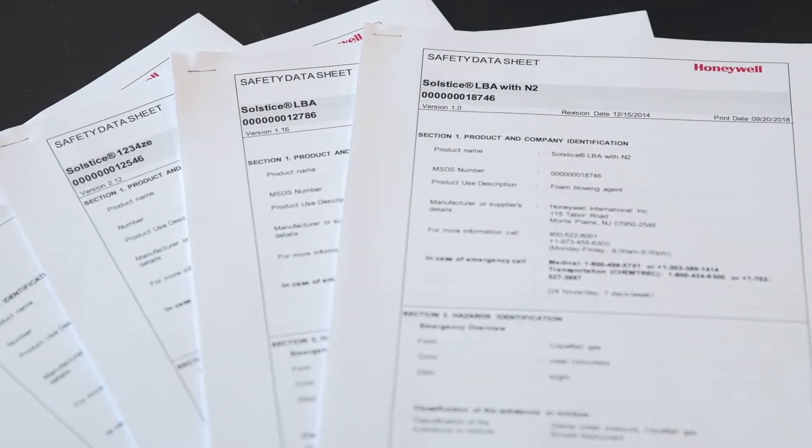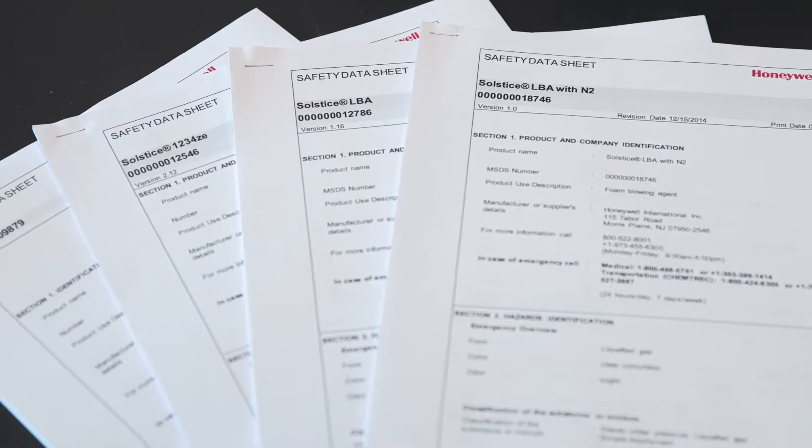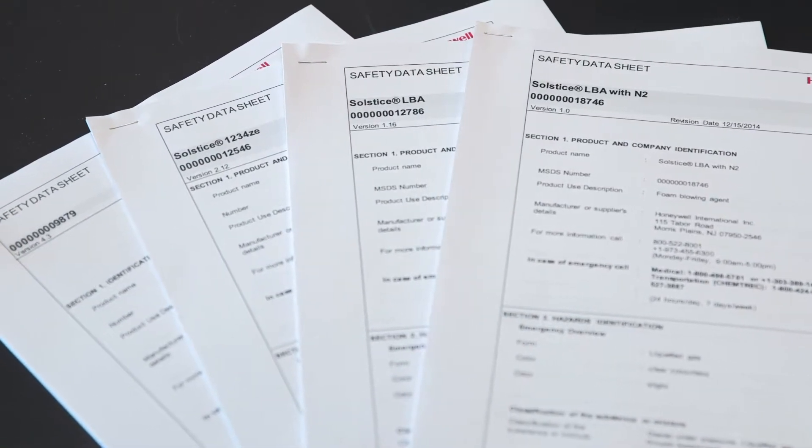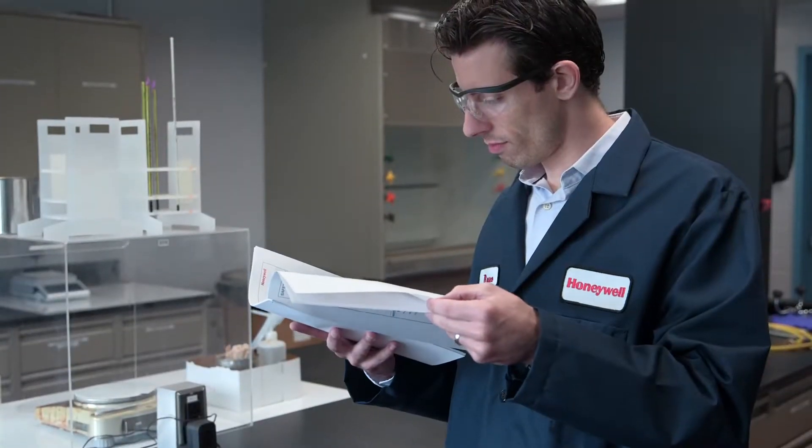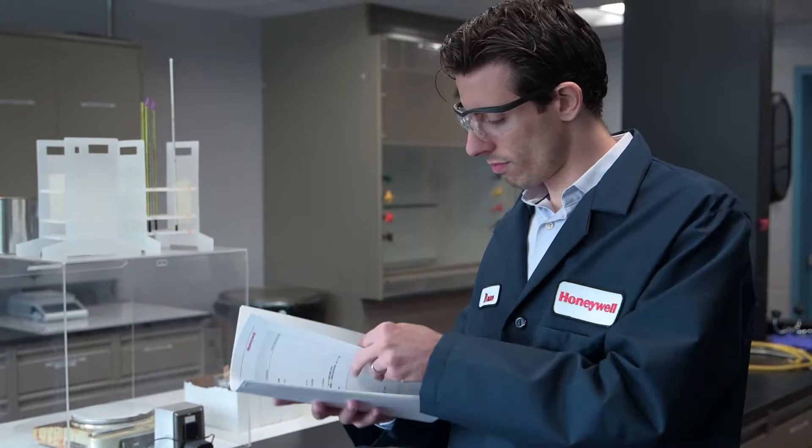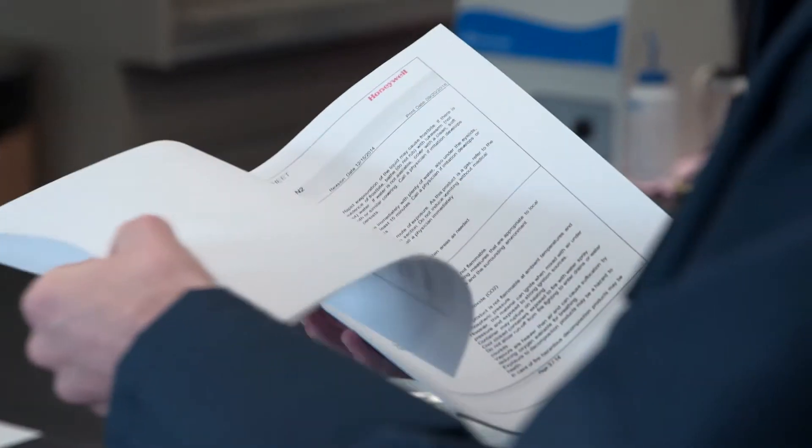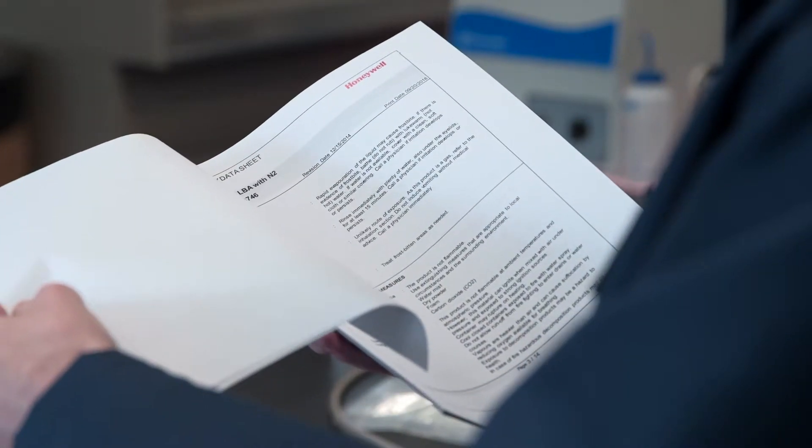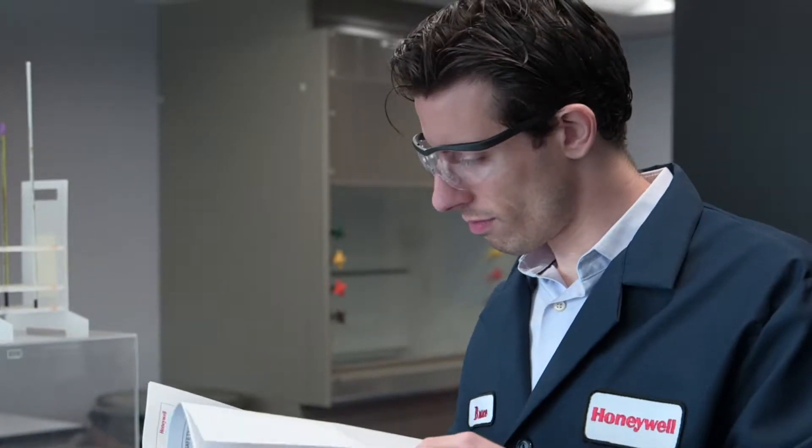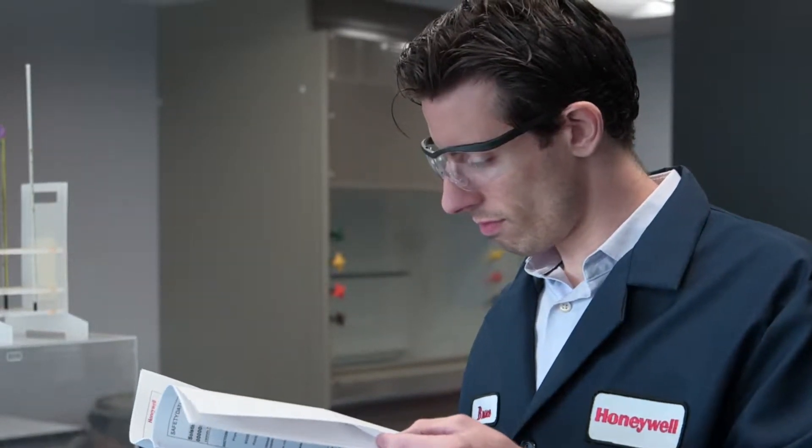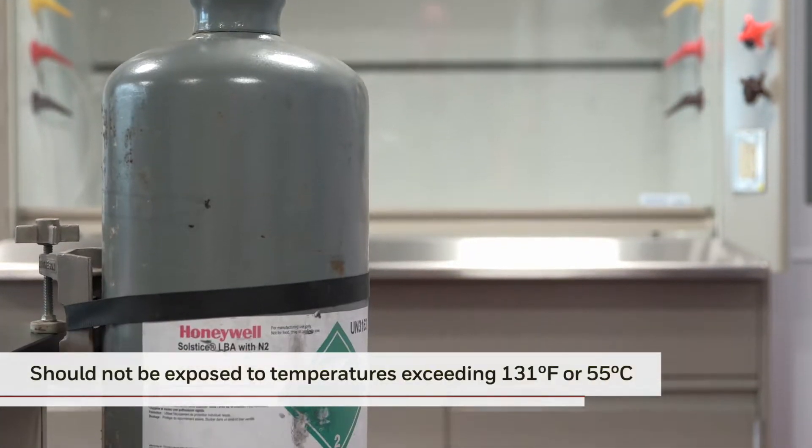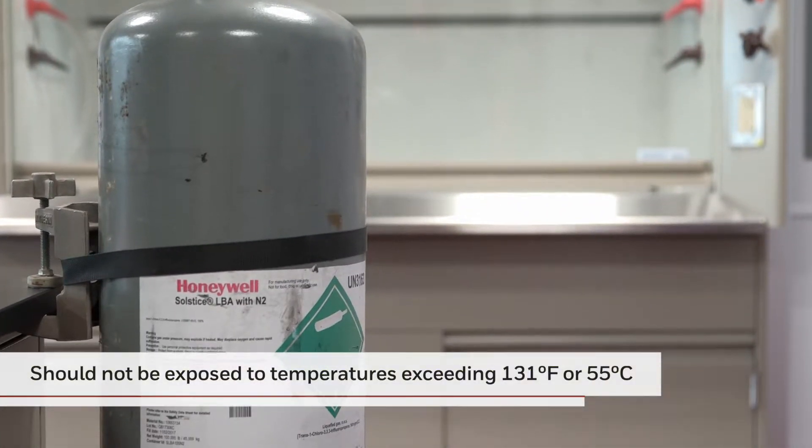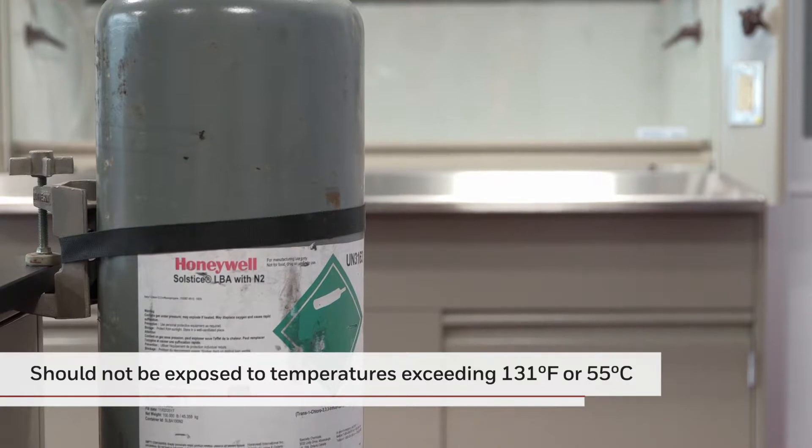Before working with any liquid under pressure, you must carefully follow instructions provided in the Safety Data Sheet or SDS. Because you will be adding dry nitrogen to the blowing agent cylinder, be sure to follow proper SDS guidance for non-pressurized or pressurized packages depending on which package you've received. Cylinders should be protected from sunlight and should not be exposed to temperatures exceeding 131 degrees Fahrenheit or 55 degrees Celsius.